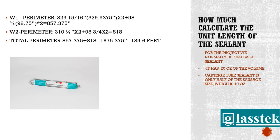In common applications for aluminum windows and curtain walls, we normally use sausage-sized sealant, which is 20 oz, and cartridge-sized tubes, which are 10 oz. For this frame, we allowed a half-inch clearance as an example at all perimeters.